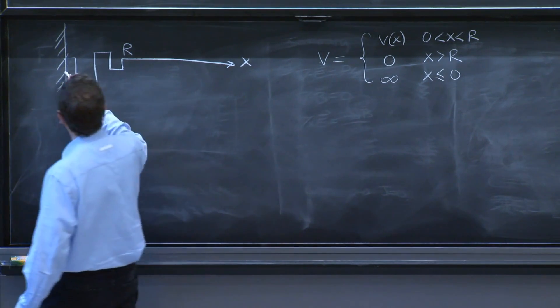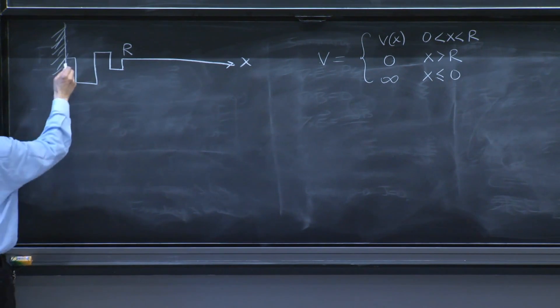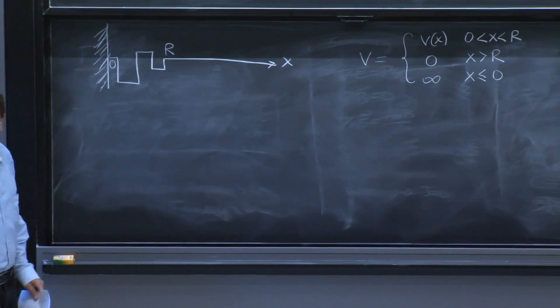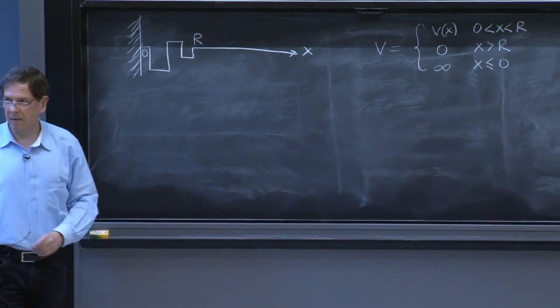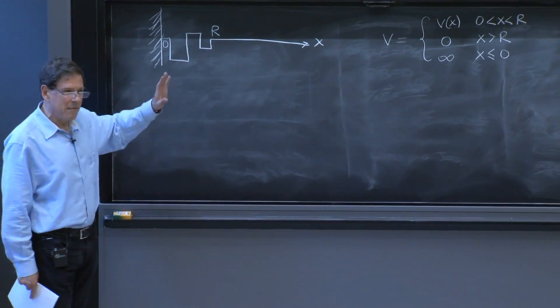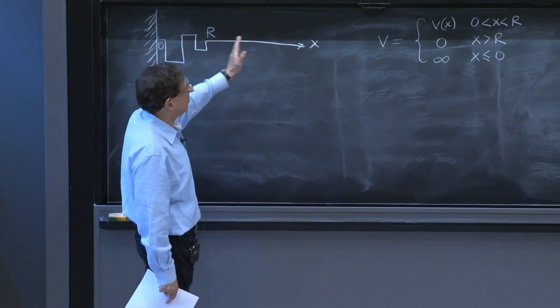So there's a wall at x equals 0. And there can be some potential, but this is called the finite range potential, because nothing happens after a distance r.